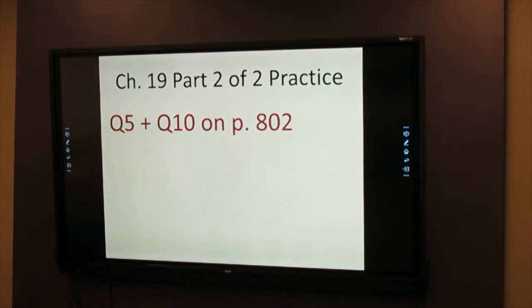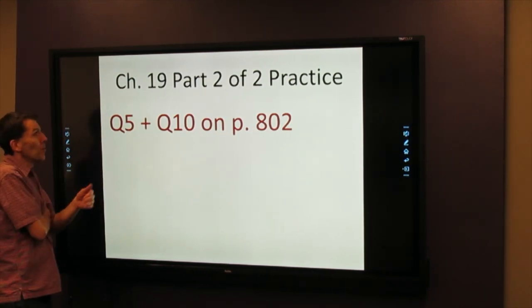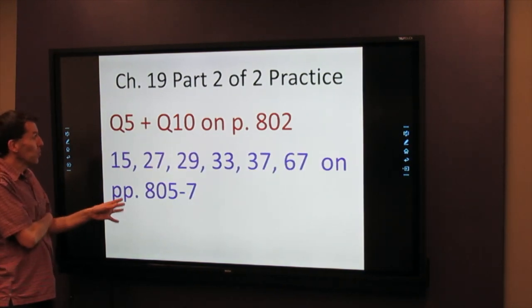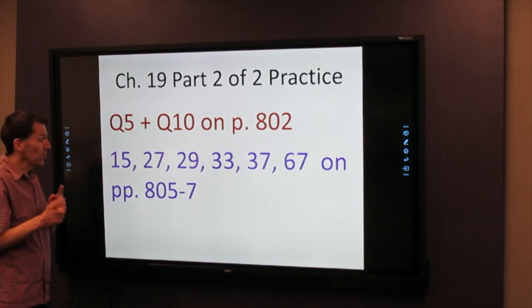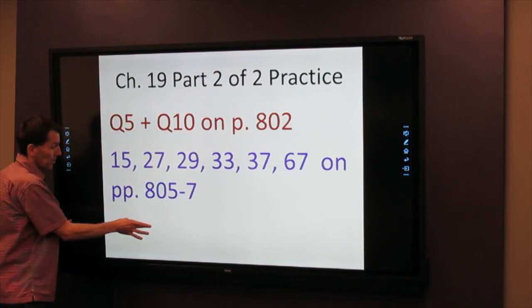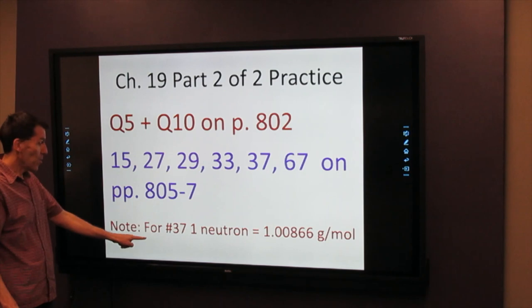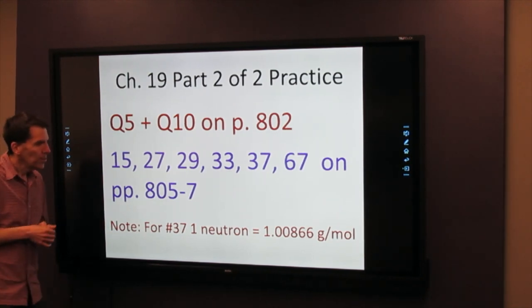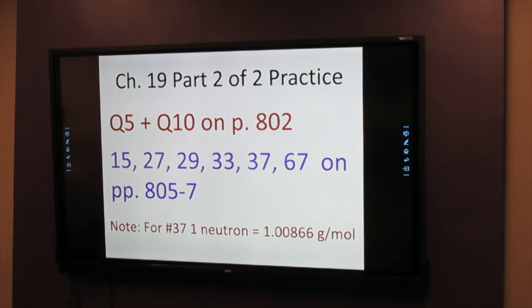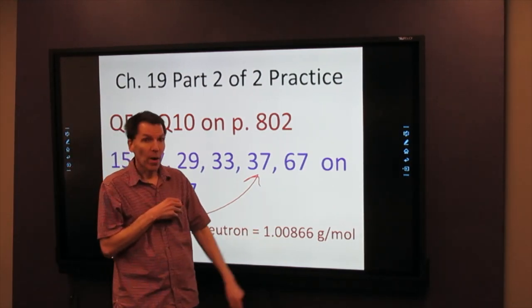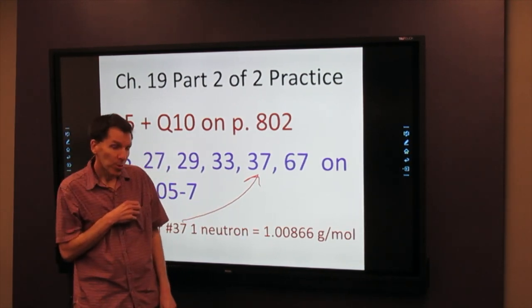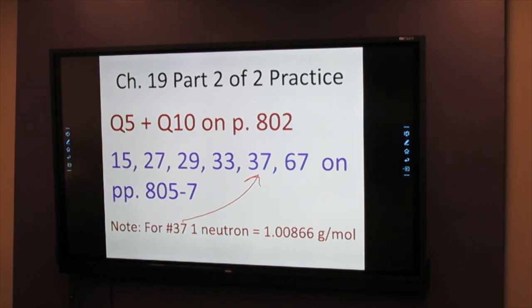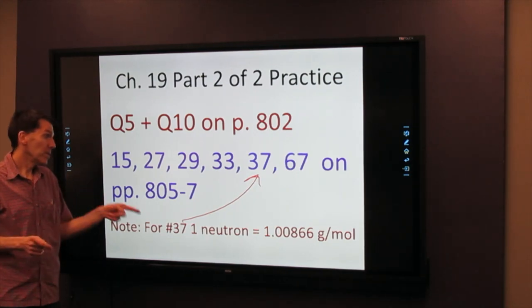So here's some practice for part two of chapter 19. A couple multiple choice questions on 802. And here are some end of chapter book problems. They deal with bombardment reactions and using E equals MC squared. Make sure you're in kilograms in those. And extra note here, I would recommend for problem 37. You really need to know the mass of the neutron. And it's not given in the problem. So one neutron is this many grams per mole. And earlier in the lecture, we rounded that to 1.009. But here we use the whole number, 1.00866. And the rest of the information is given to the problem, but you need that number.